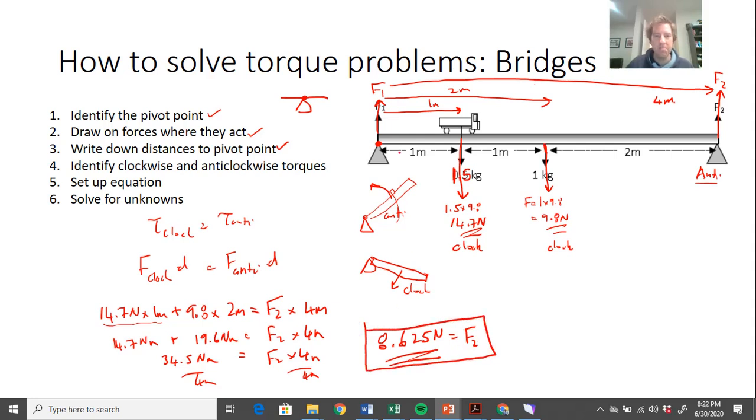So notice when I chose the pivot point to be on the left, I ended up working out the one on the right. So if I'd started again and chosen my pivot point to be on the right and done the same calculations, I would have worked out F1.